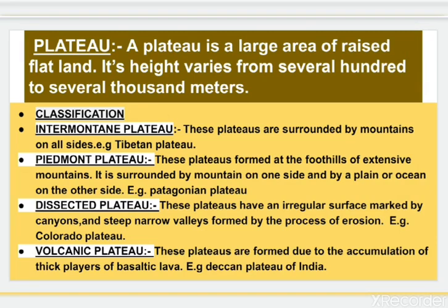Next is plateau. A plateau is a large area of raised flat land. Its height varies from several hundred to several thousand meters. Plateaus are of four types. First, we will learn about inter-mountain plateaus. These plateaus are surrounded by mountains on all sides. Example: Tibetan plateau.